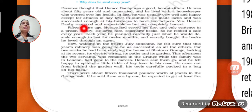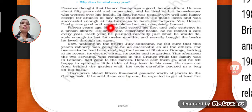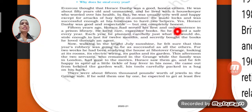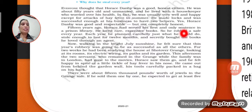He made locks and was successful enough at his business to have two helpers. Horace Danby was good and respectable, but not completely honest. Fifteen years ago, Horace had served his first and only prison sentence in a prison library.